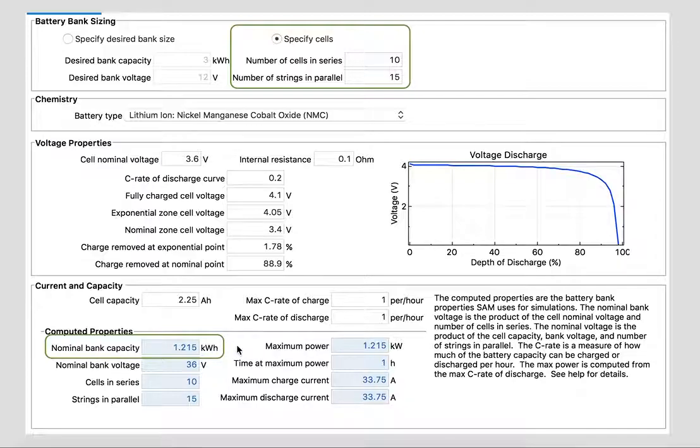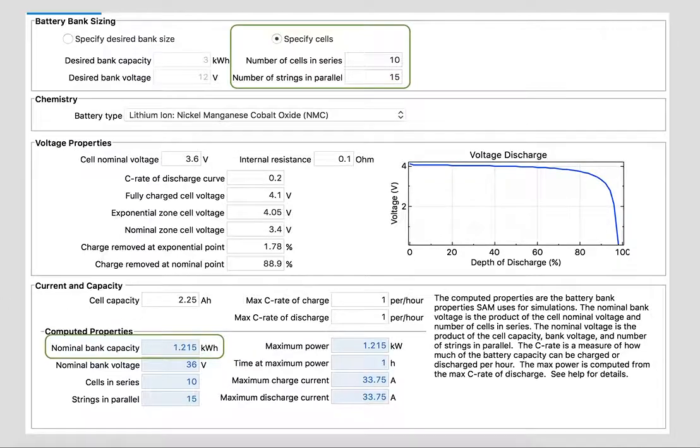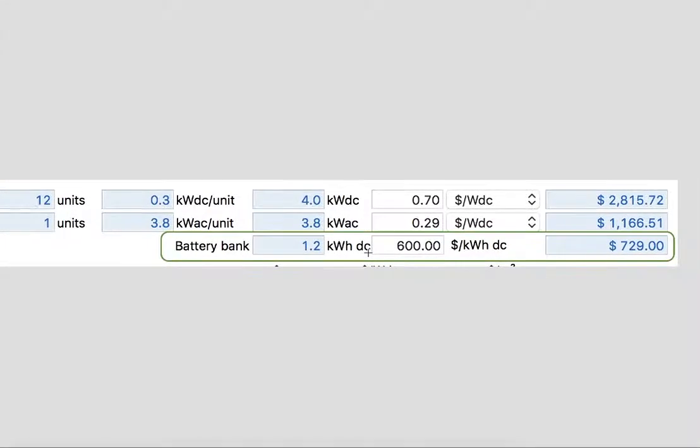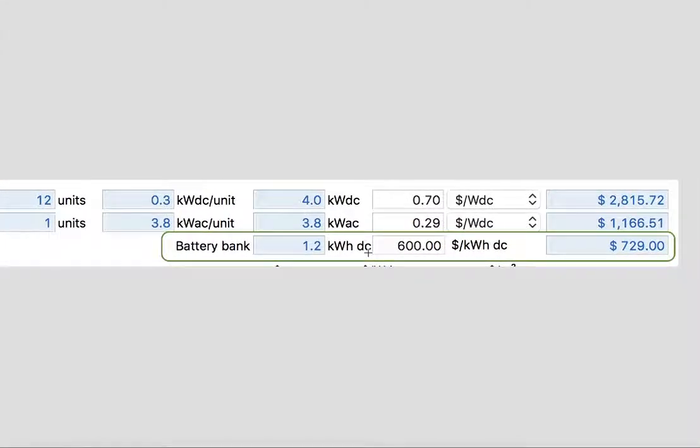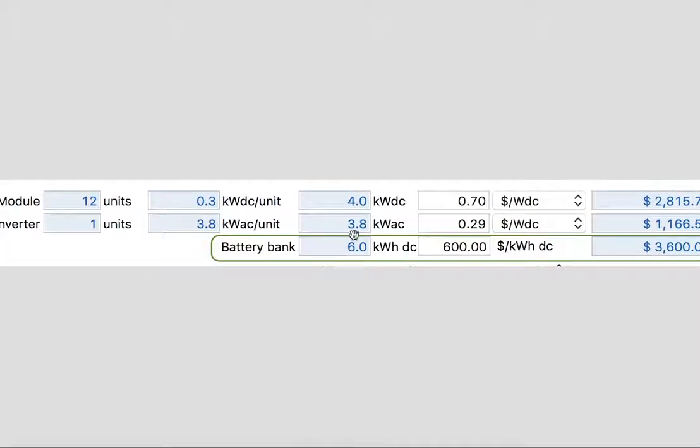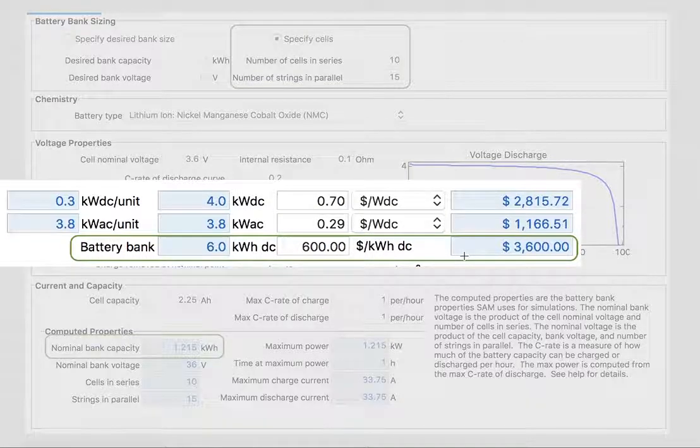That 1.215 kilowatt hours is going to go into the system costs. Let's look at that. It's going to give us right here a 1.2 kilowatt system times 600 dollars per kilowatt hour, and so it will appear that a lithium-ion battery—which we know are more expensive than a lead-acid battery—would appear that the lithium-ion battery is less expensive than the comparable lead-acid battery that was $3,600.